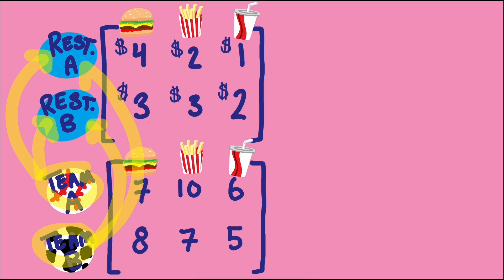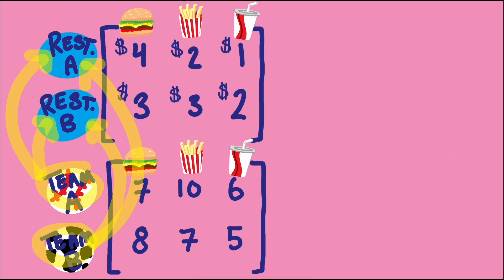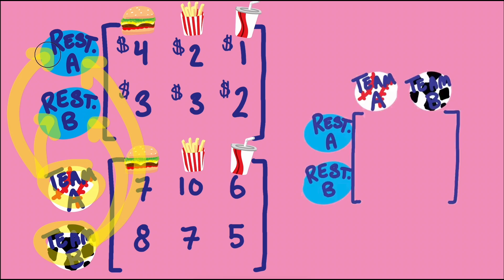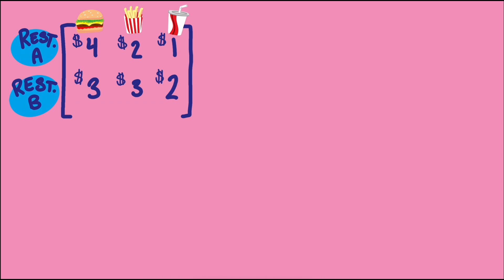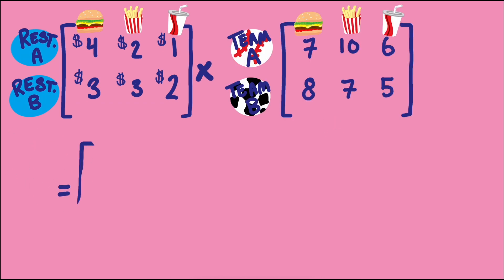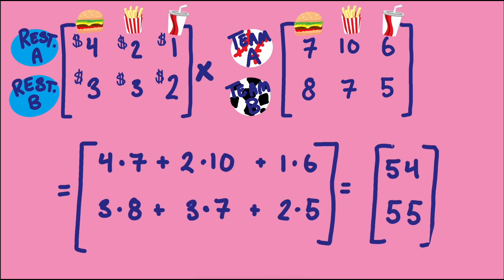We need to do some type of multiplication since we have a cost matrix and an amount matrix, and we want a total amount matrix. At first we might think to multiply corresponding entries. That does get us the right costs because we are multiplying costs of burgers by the number of burgers, cost of fries by the number of fries, etc. It also makes sense to add up the costs for each row so we get a total.